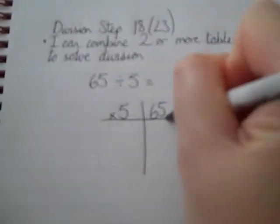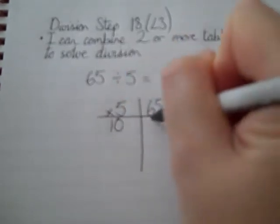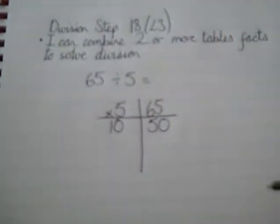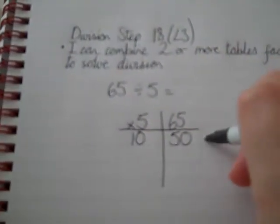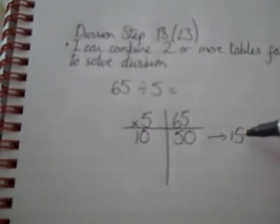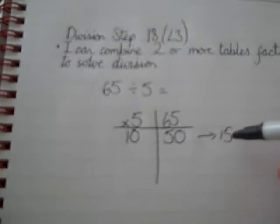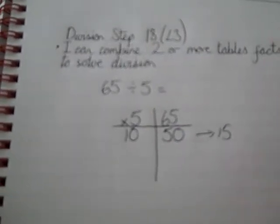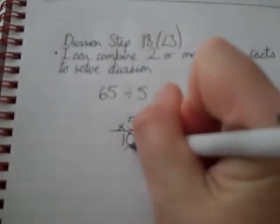And we can say that we know that 10 5s make 50, which would leave us with 15 out of the original pot. So now we need to know how many 5s there are in 15. 5, 10, 15, there are 3.